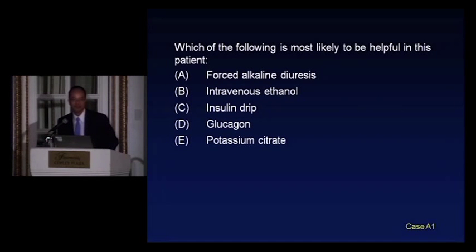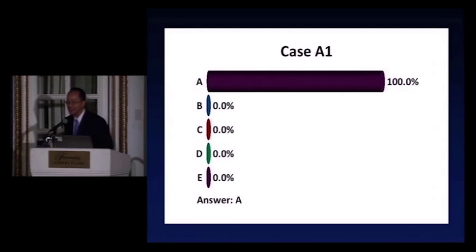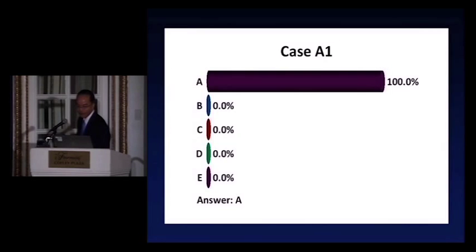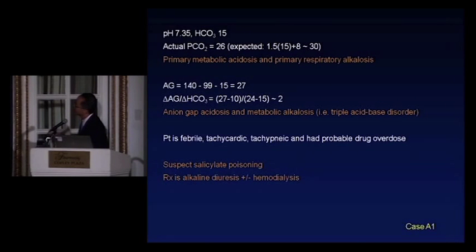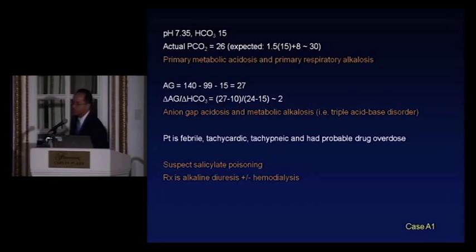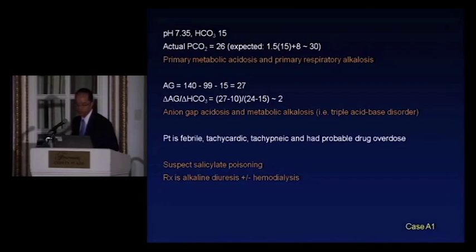100% correct — whoever answered gets a gold star. This patient has a primary metabolic acidosis, a primary respiratory alkalosis, and if you calculate the delta-delta, also a metabolic alkalosis, presumably from vomiting. She's febrile, tachycardic, tachypneic, and has a probable drug overdose, so you'd certainly want to suspect salicylate poisoning, in which case forced alkaline diuresis would be appropriate.